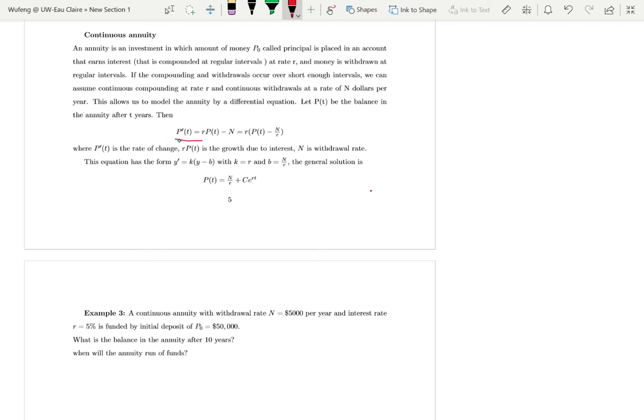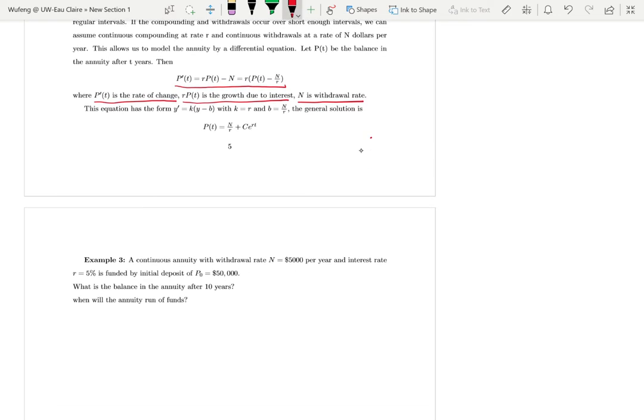The amount change is dP/dt = rP(t) - N. dP/dt is the rate of change, rP(t) is the growth due to interest, and N is the withdrawal rate. This is the interest minus the money you take out as the change, the money change rate.